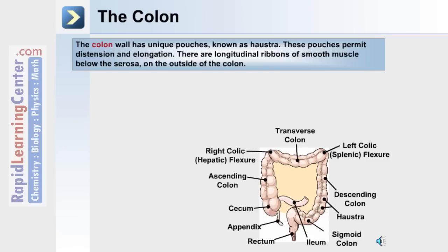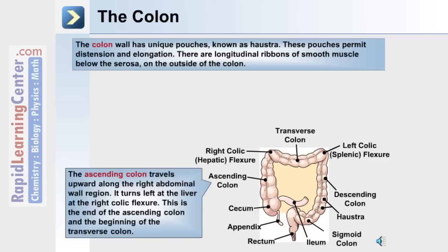The colon has unique pouches known as haustra. These pouches permit distension and elongation of the colon. There are longitudinal ribbons of smooth muscle below the serosa on the outside of the colon. The first portion of the colon is the ascending colon, which travels upward along the right abdominal wall. It turns left at the liver at the right colic or hepatic flexure, marking the end of the ascending colon and the beginning of the transverse colon.